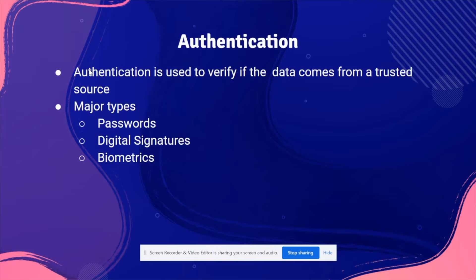Different types of authentication include passwords, digital signatures, and biometrics. Digital signatures involve checking the hash of your computer code and seeing if it matches something on the database. The computer code can be anything that is used to verify your data.